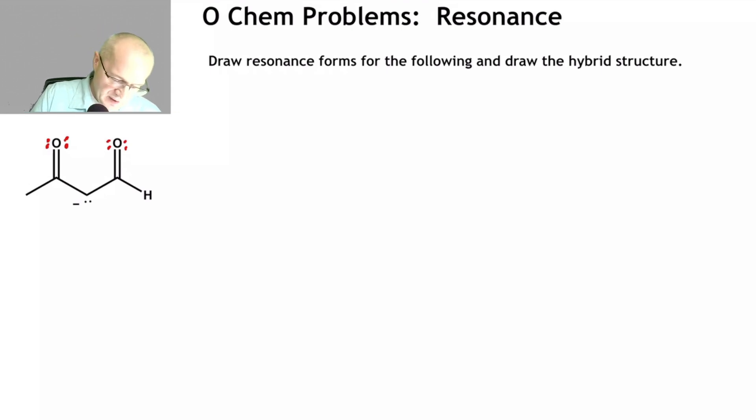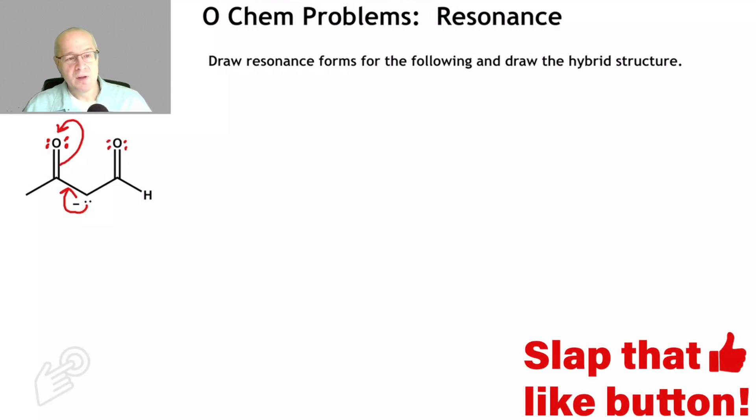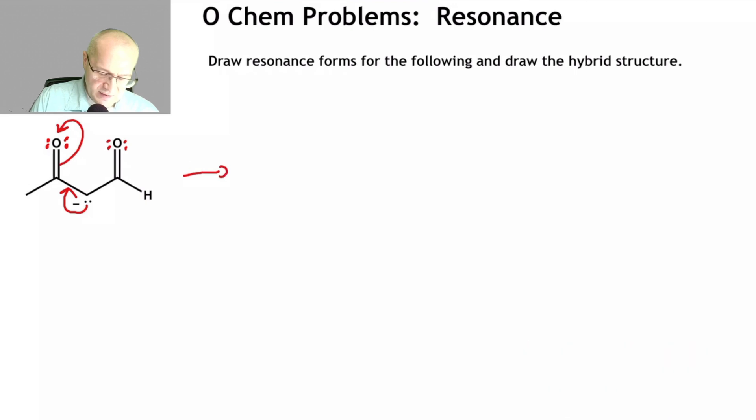Now this is how I would do it. I would draw the lone pair going towards this carbonyl and push up that pi bond. Why did I choose to go left and not right? Because I did. There's no reason for it, I just did. Draw the resonance arrows like this. So there's one kind of resonance form.